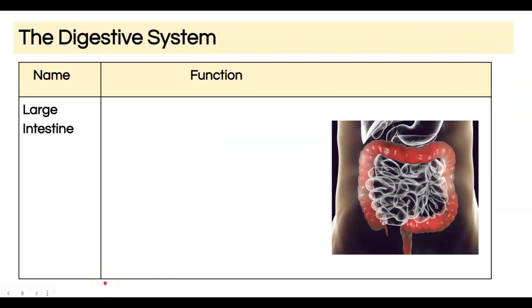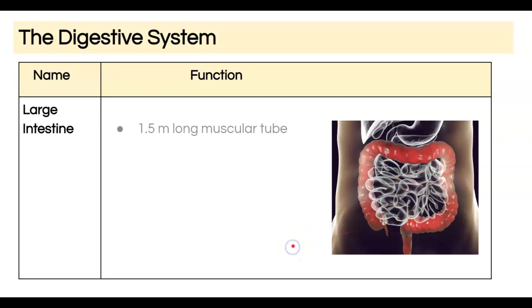Next we have the large intestine, where food moves after passing through the small intestine. At this point we've broken down our food and absorbed the nutrients — what remains is to absorb water back into our body. The large intestine is about one and a half meters in length, compared to six meters for the small intestine.